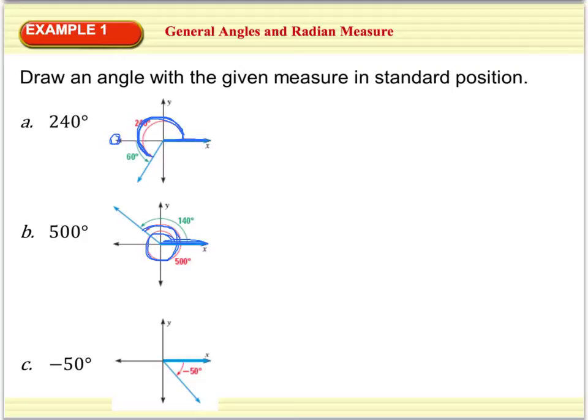And for part C, I have a negative 50 degrees. And if you remember, a negative number means that we have an angle that's being measured in the clockwise direction. So I'm still going to start out on that initial ray and go in the clockwise direction 50 degrees until I hit my terminal ray here.